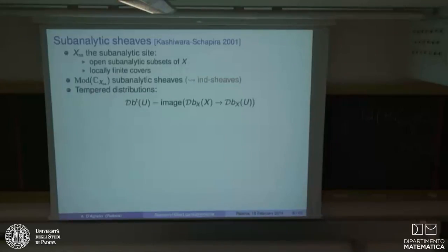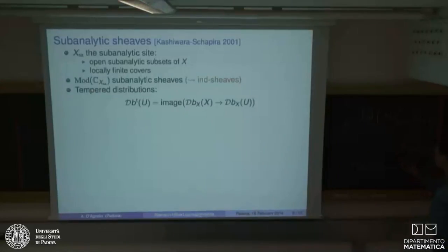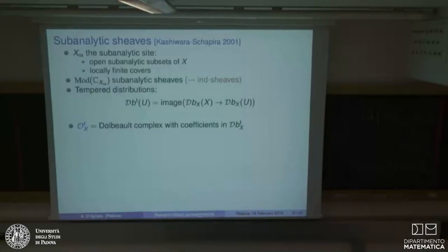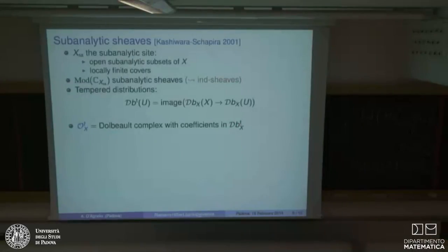This is the first non-trivial example of a sub-analytic sheaf. If you pull back this sheaf as a usual sheaf, you recover usual distributions and lose the growth condition. Out of this you can construct the complex mentioned earlier of tempered holomorphic functions — as usual when you have distributions, you can construct holomorphic functions by taking the Dolbeault complex. Be careful that in this setting the Poincaré lemma does not hold; it is really a complex, not an object concentrated in degree zero.